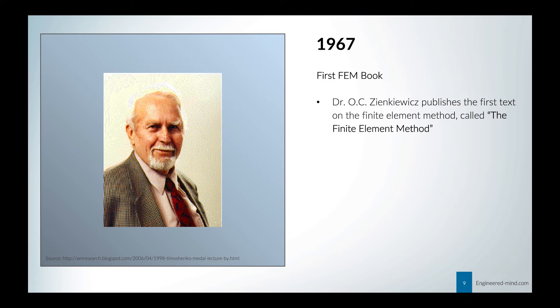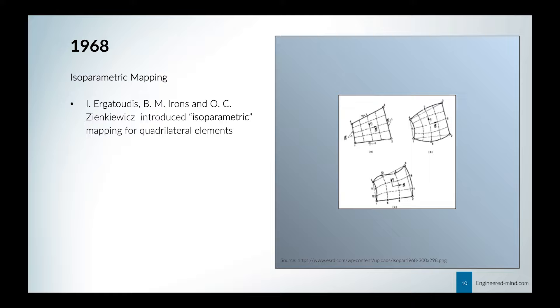Two years later, the first FEM book was released by Dr. Zienkiewicz, and he simply called it 'The Finite Element Method.' In 1968, the term isoparametric mapping appeared — Zienkiewicz and some colleagues introduced isoparametric mapping for quadrilateral elements. This will be covered in a future video and not discussed in this basic introduction.